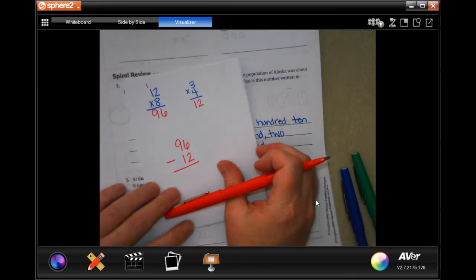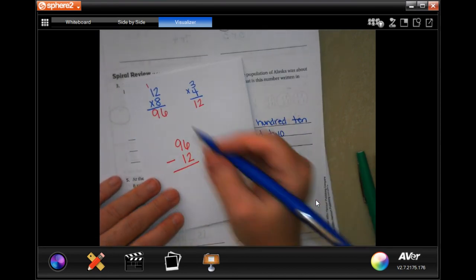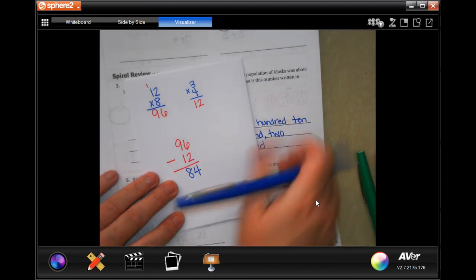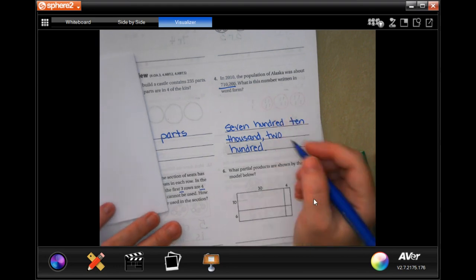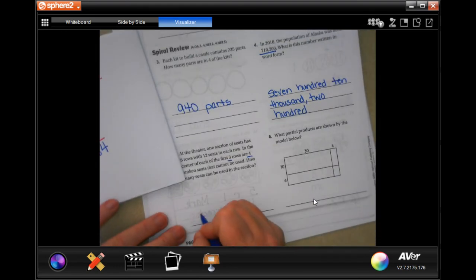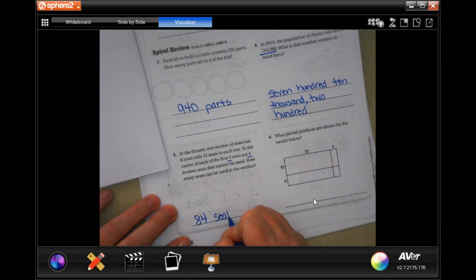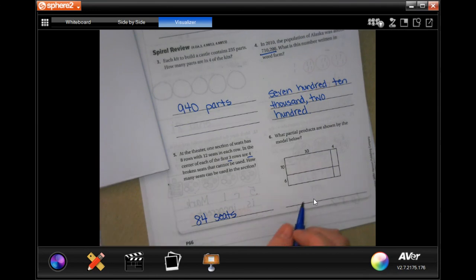Let me move this so you can see it. Sorry about that. Six minus two is four and nine minus one is eight. So how many seats can be used in the section? 84 seats.